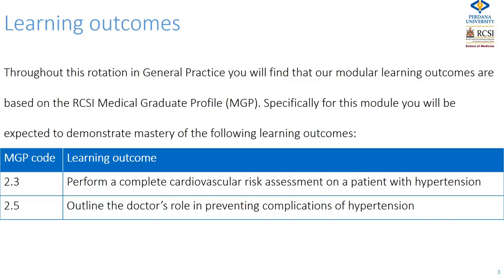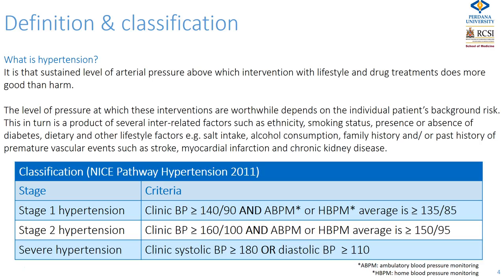Let's look at the definition and classification. At its simplest, hypertension is that level of sustained blood pressure above which intervention with lifestyle and drug treatments does more good than harm. The level of pressure at which these interventions are worthwhile may depend on the patient's background risk, which is due to several interrelated factors.